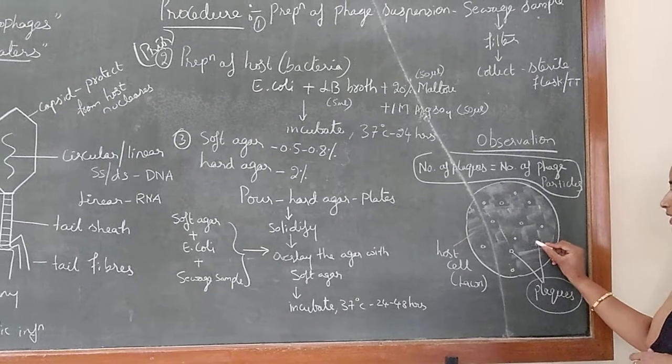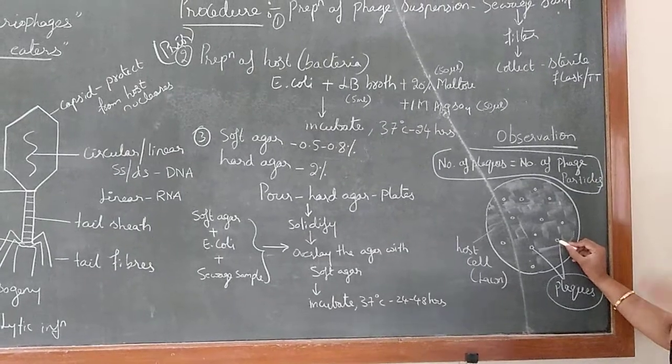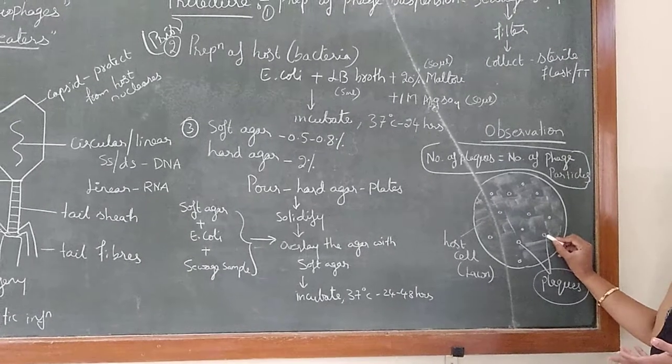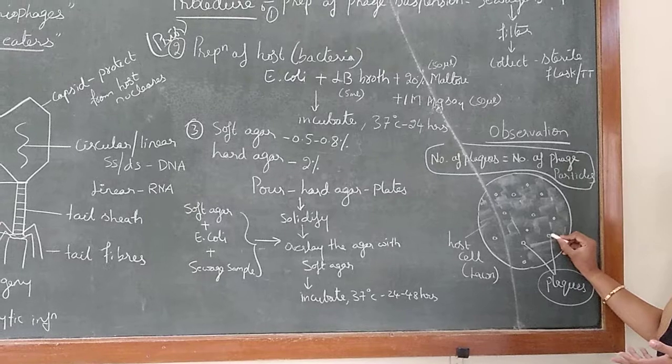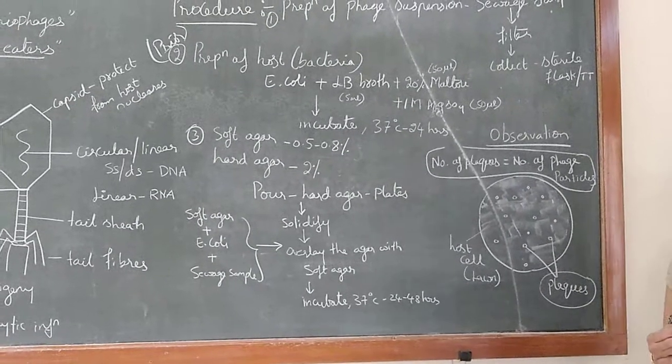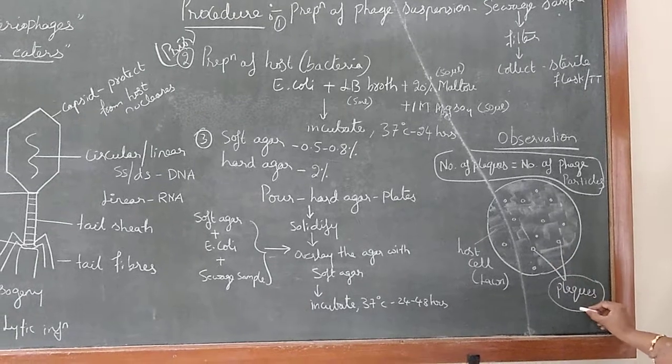So that means the bacteriophages in this specific area, they had killed the bacterial cell due to the successive infections. So that's why you can see the clear zone at particular areas on the surface of the agar. So these are considered as the plaques.